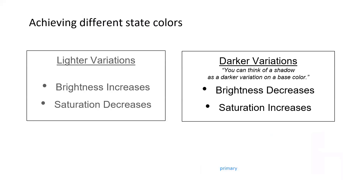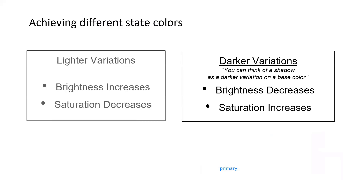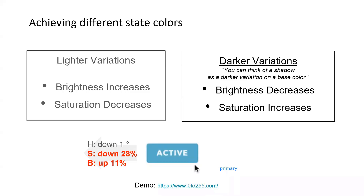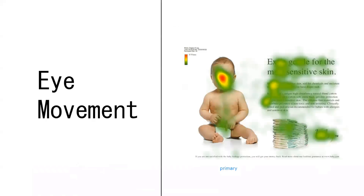To achieve different state colors: if you want a lighter variation, increase the brightness and decrease the saturation — that gives you a disabled state look. If you want a darker variation, do the opposite — drop down the brightness and push up the saturation. This is the last section — on eye movement, talking about how users actually read and engage their eyes during user interaction.